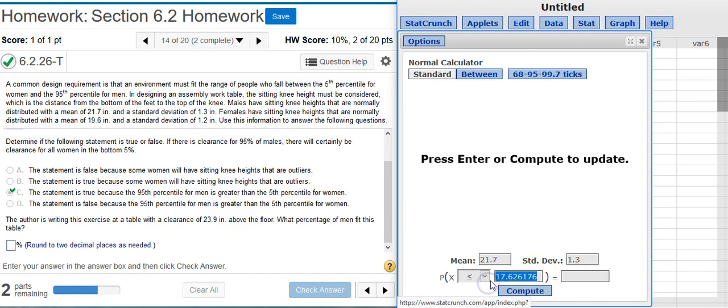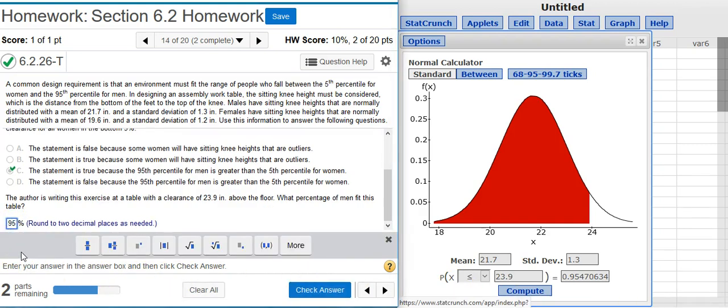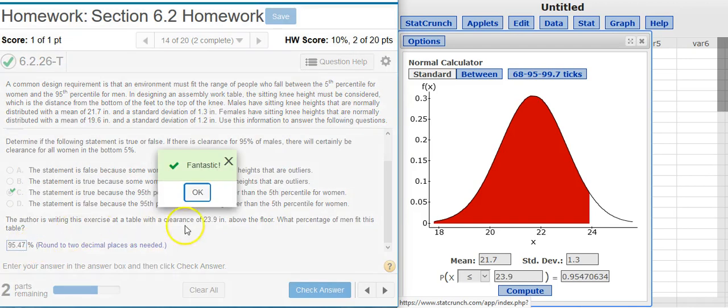And then I put in the random variable here, 23.9, and then I'm going to get a percentage or probability coming out the other end. So it looks like we want around two decimal places, so that's 95.47 percent. Fantastic.